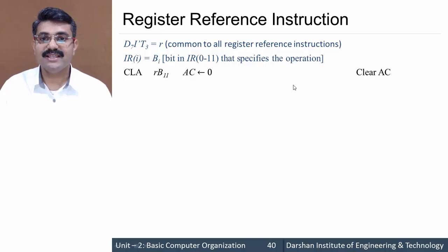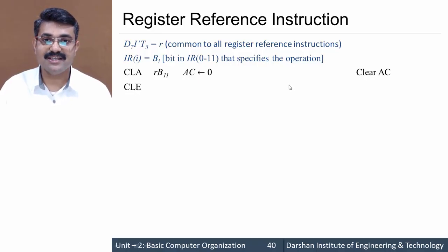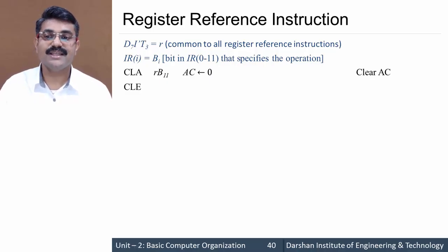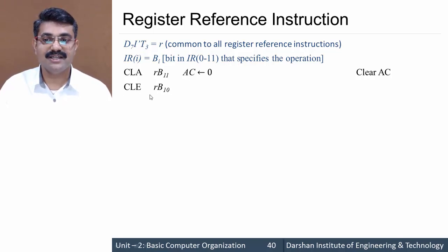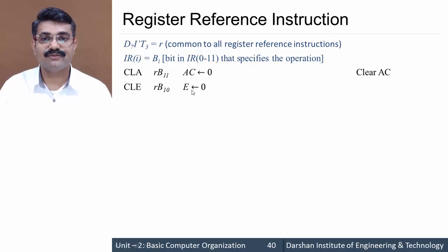Similarly, the next instruction is CLE — clear E, meaning the extended accumulator bit. CLE happens at r·b10, that is d7 i-dash t3 with bit number 10 set to 1. At that time the content of E is set to 0.